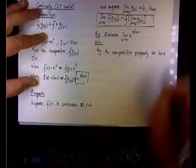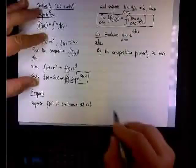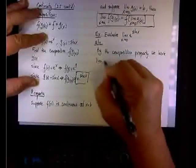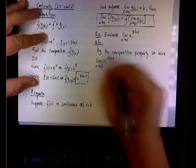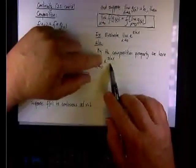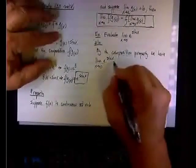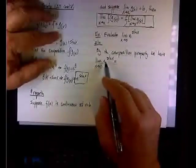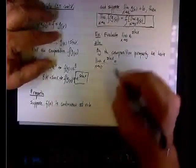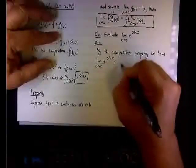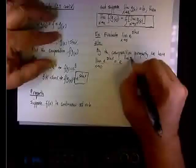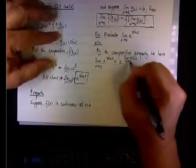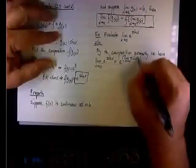By the composition property we have the limit of e^(sin x) when x approaches 0. Since this is the composition f∘g, the right side tells me f is e, so it will be e raised to the limit of sin x when x approaches 0.